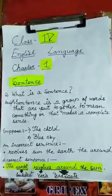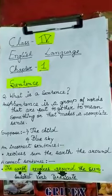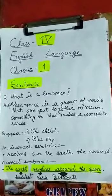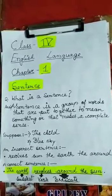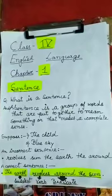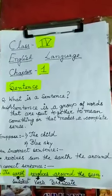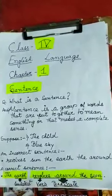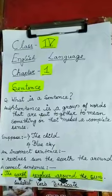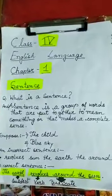Suppose I am telling you: 'the child' — is this a sentence? No. 'Blue sky' — is this a sentence? No. These are incorrect sentences.